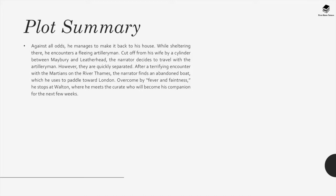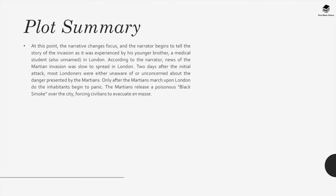After a terrifying encounter with the Martians on the River Thames, the narrator finds an abandoned boat, which he uses to paddle toward London. Overcome by fever and faintness, he stops at Walton, where he meets the curate who will become his companion for the next few weeks. At this point, the narrative changes focus and the narrator begins to tell the story of the invasion as experienced by his younger brother, a medical student, also unnamed, in London. According to the narrator, news of the Martian invasion was slow to spread in London — two days after the initial attack, most Londoners were either unaware of or unconcerned about the danger.